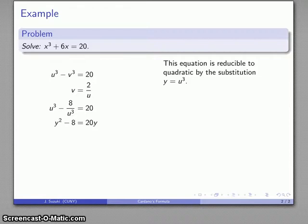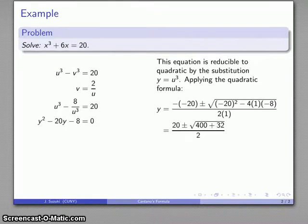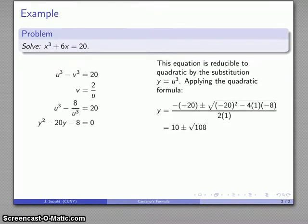y equals u cubed allows me to rewrite this as a quadratic equation, and I can apply the quadratic formula to get my solutions. y equals 10 plus or minus root 108. And one important thing to note here is we actually get two solutions here, and so you might wonder if the fact that we have two values of y is going to give us two values of u, and then that's going to give us two different solutions, x equals u minus v.